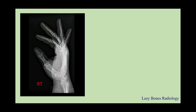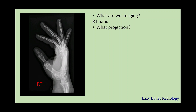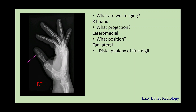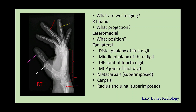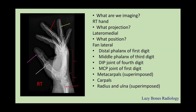Here is an example of a fan lateral. What are we imaging? This is the right hand. What is the projection? This is a lateralmedial projection. What is the position? This is a fan lateral. Now let's practice anatomy: distal phalanx of the 1st digit, middle phalanx of the 3rd digit, DIP joint of the 4th digit, MCP joint of the 1st digit, metacarpals that are superimposed, the carpal group, and the radius and ulna that are superimposed. Please make sure to review and be knowledgeable with these positions.